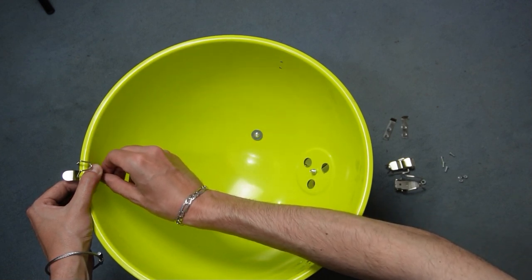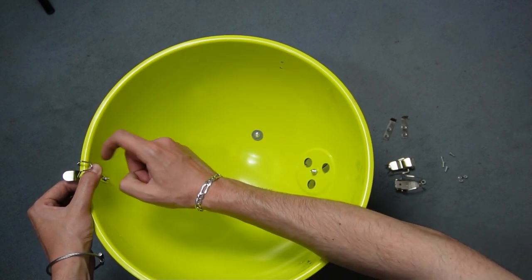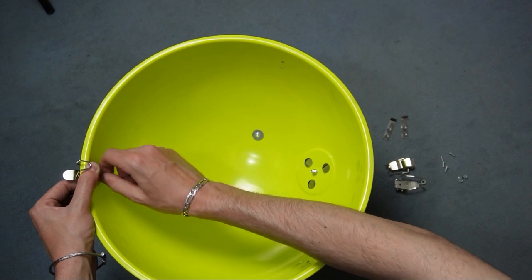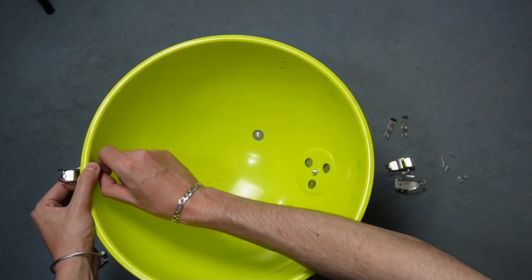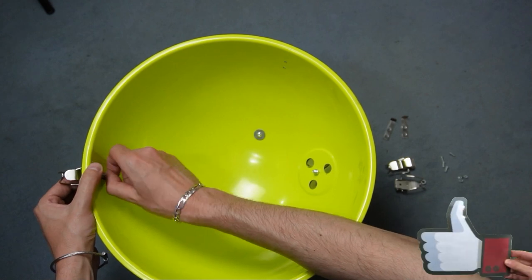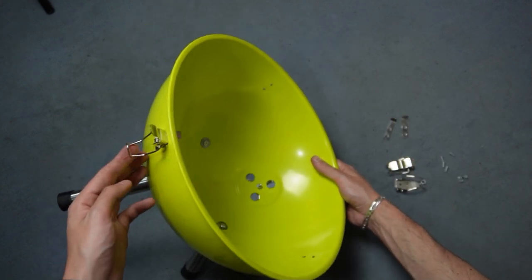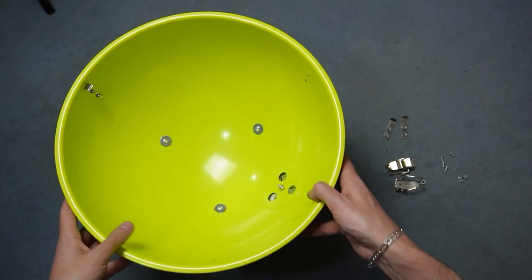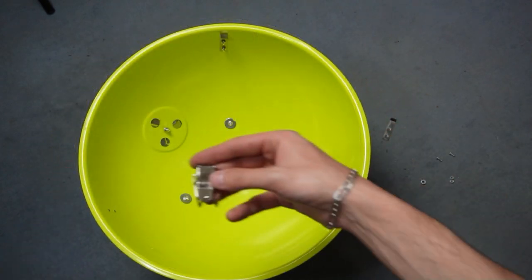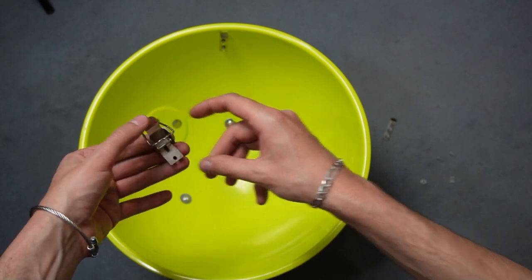These bolts must be tightened securely so use a small wrench or pliers and a screwdriver to tighten them all the way. It should look like this. Now we have to mount the rest of the clips the same way.